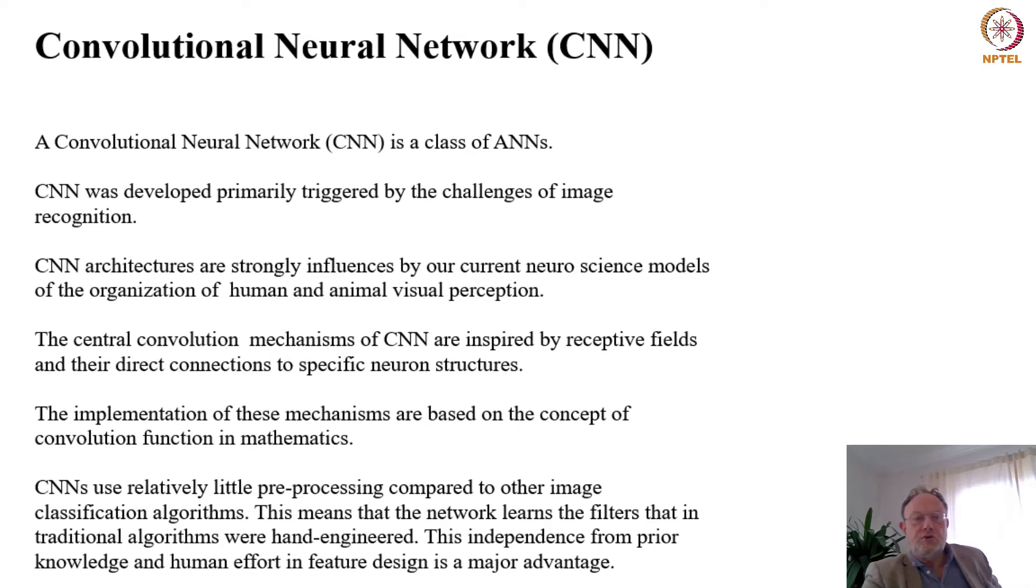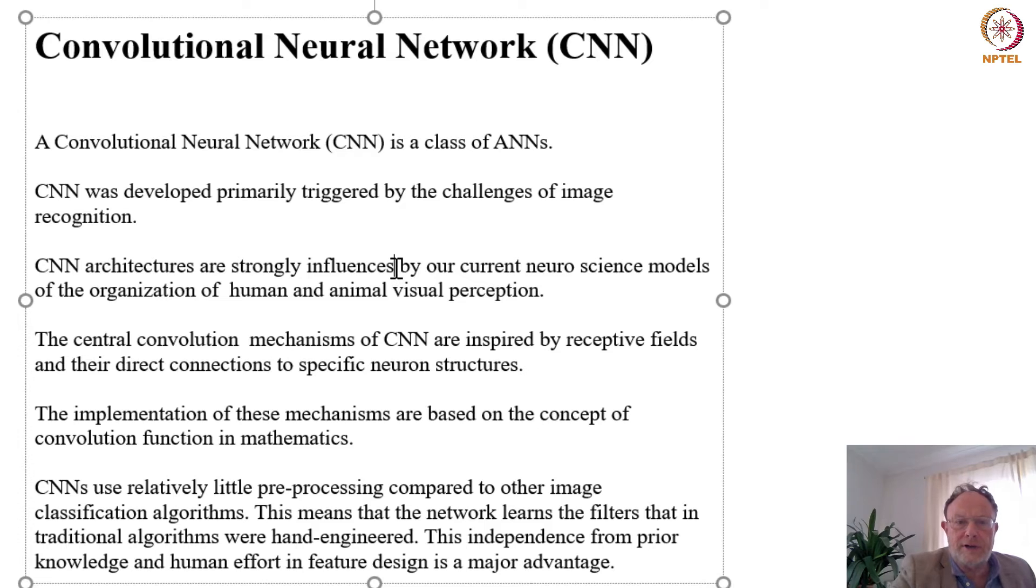A convolutional neural network, abbreviated CNN, is a class of ANNs primarily triggered by the challenges of image recognition. CNN architectures are strongly influenced by our current neuroscience models of the organization of human and animal visual perception.